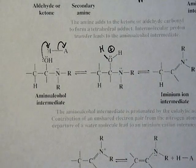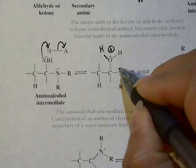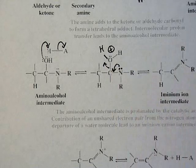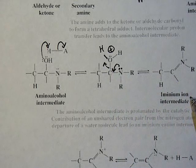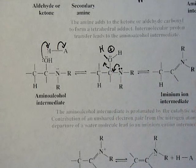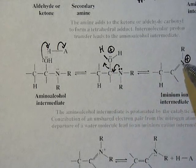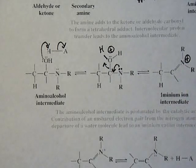Then the lone pair is going to go and drive off the water, so it forms the iminium ion just like you've seen before—this plus charge species with the nitrogen and a double bond—it's not stable.